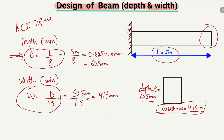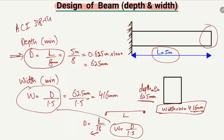For a simply supported beam, the previous formula is not valid. For a simply supported beam, the minimum depth is equal to L/16 — we just change the constant from 8 to 16. The width of the beam is similarly d divided by 1.5; this formula remains the same. This is the rule for a simply supported beam.